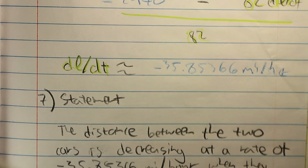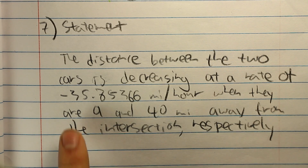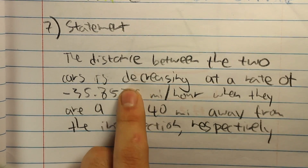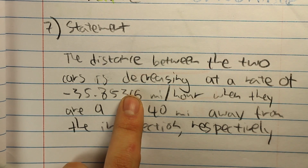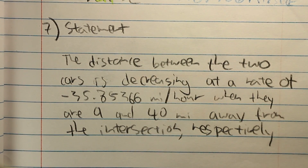From there, you can make a statement: the distance between the two cars is decreasing at a rate of 35.85366 miles per hour when they are 9 and 40 miles away from the intersection respectively. Note: the negative sign should not be included in the final statement because it is already implied by the word 'decreasing.' On the AP exam, two negatives would be taken as a positive, so be careful not to include a negative with 'decreasing.'